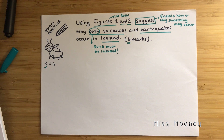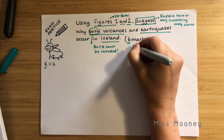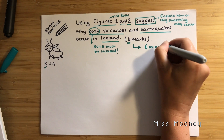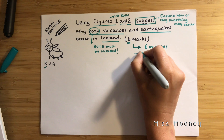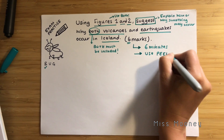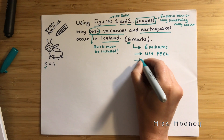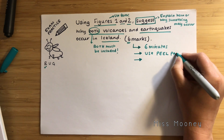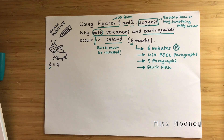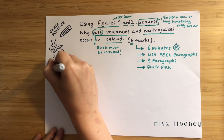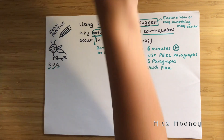As it's a six mark question, you should try to spend six minutes on the question — that's one minute per mark. Use your PEE paragraphs for a six mark question. You don't necessarily need to do the link like you would for a nine marker. The key things to include are the point, the evidence, and the explanation. Write three clear paragraphs and do a very quick plan to ensure a good structure before you get started.